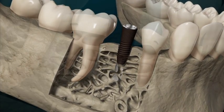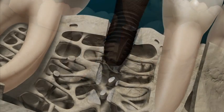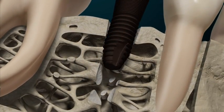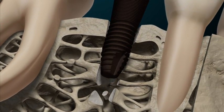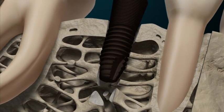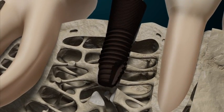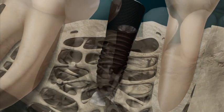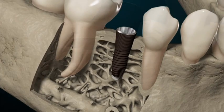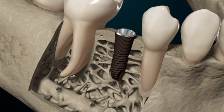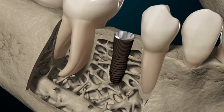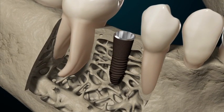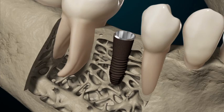Osseointegration, or secondary implant stability, requires a highly complex sequence of additional biodynamic processes. This is facilitated by finely tuned communication between the main actors of wound healing — the cells.